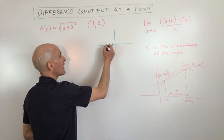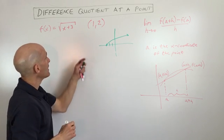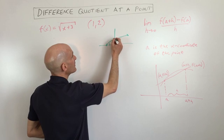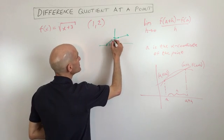So one, two, three, and it looks something like that. Now we're interested in at one comma two, which is going to be right about there. We're interested in what's the slope